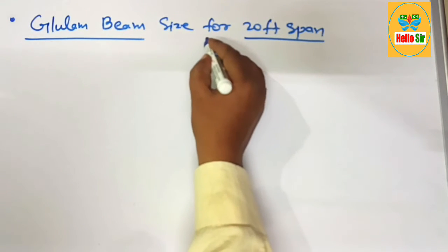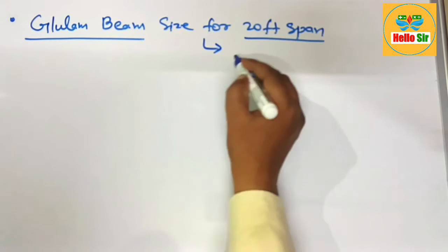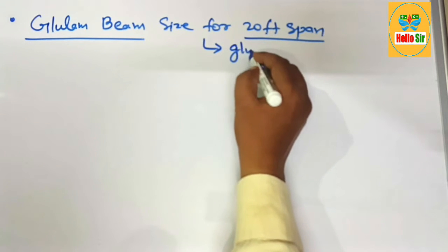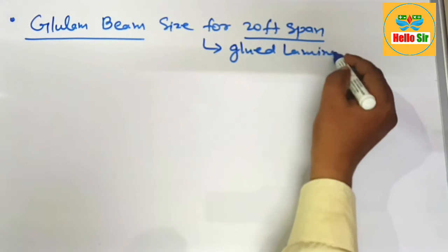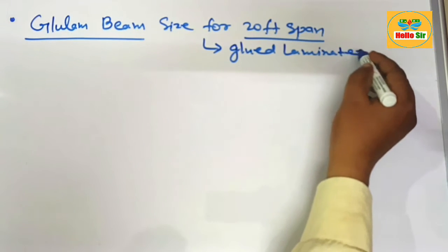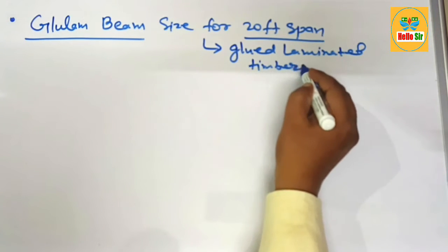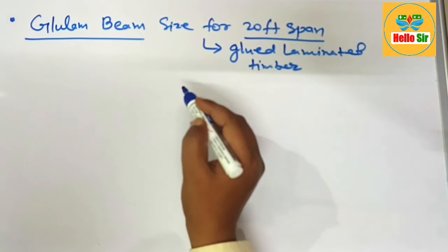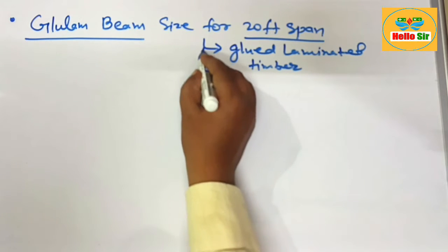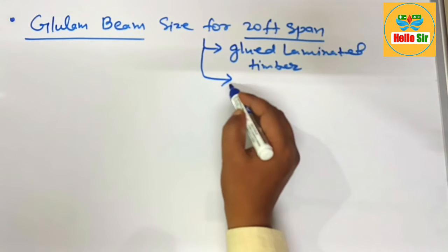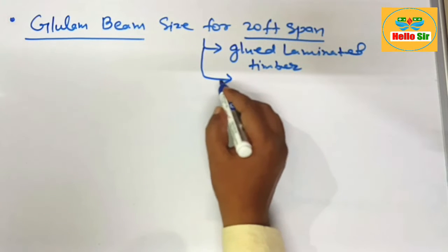First we understand about what is a Glulam beam. It is glue laminated timber, made by a sandwich of multiple layers of thin sheets of wood with adhesive material. And it is a linear wood product of high strength.